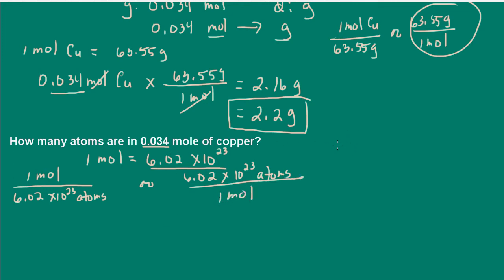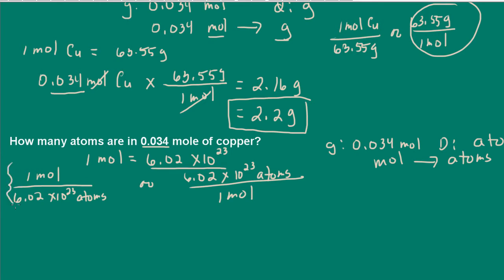I forgot to write my road map. My given is 0.034 moles and my desired unit is atoms. So we're going from moles to atoms. Because I have this equivalence and these conversion factors, I only need the one conversion factor.